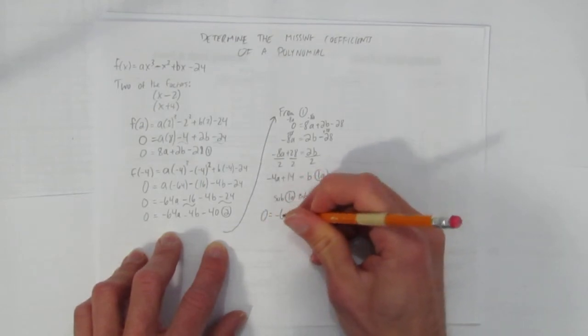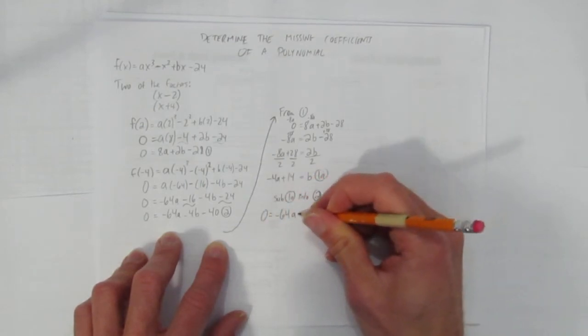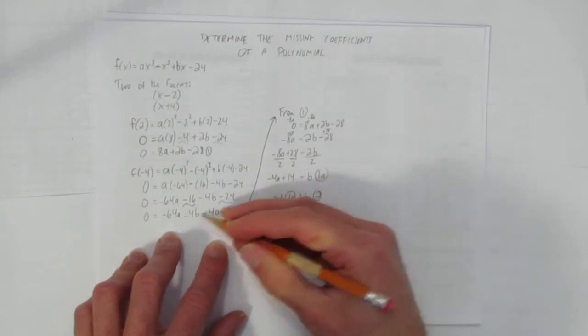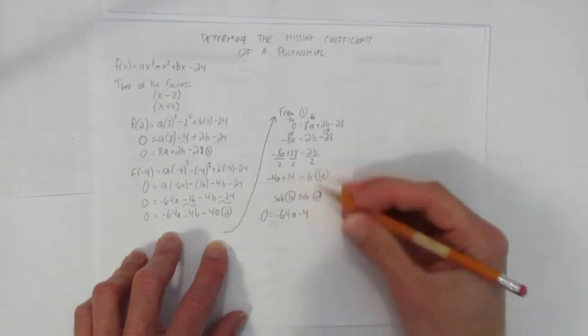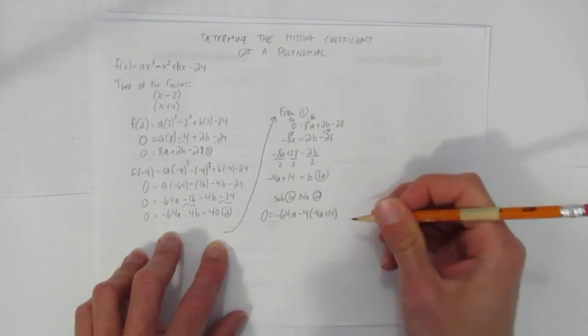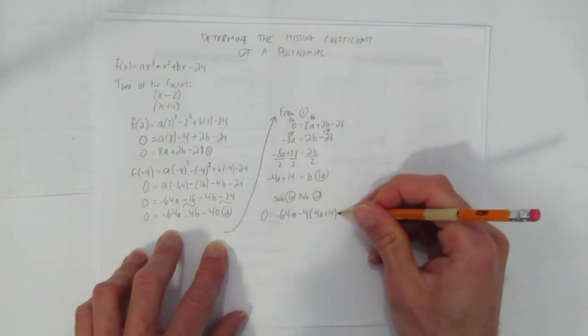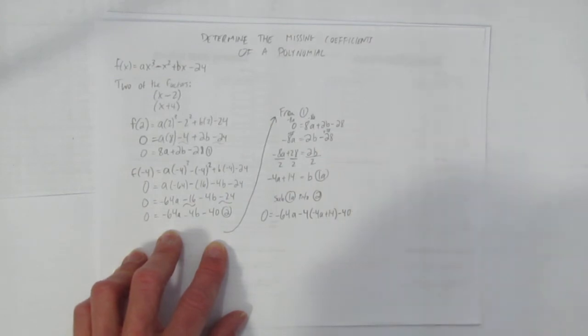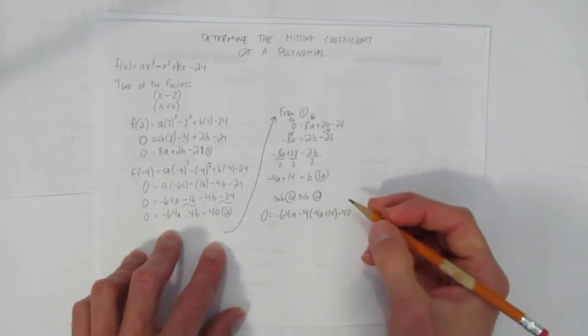So I have 0 equals negative 64a minus 4. But now the b becomes this. The b is negative 4a plus 14. Close the brackets. And then subbing into 2 leaves that minus 40 out there. And now I have one equation, one unknown, solved.